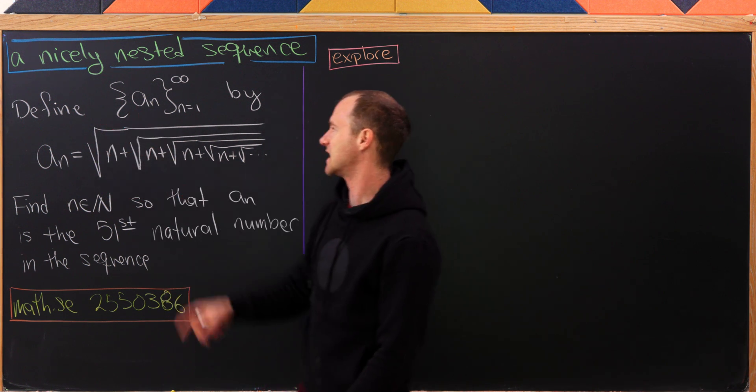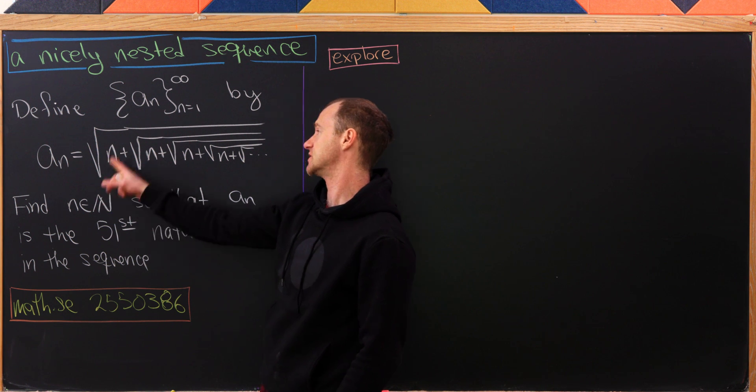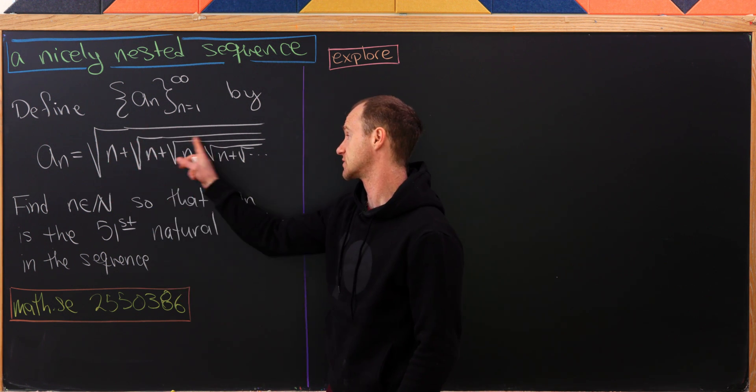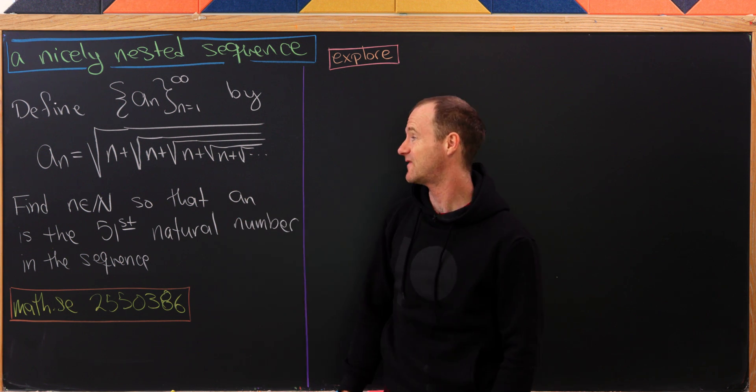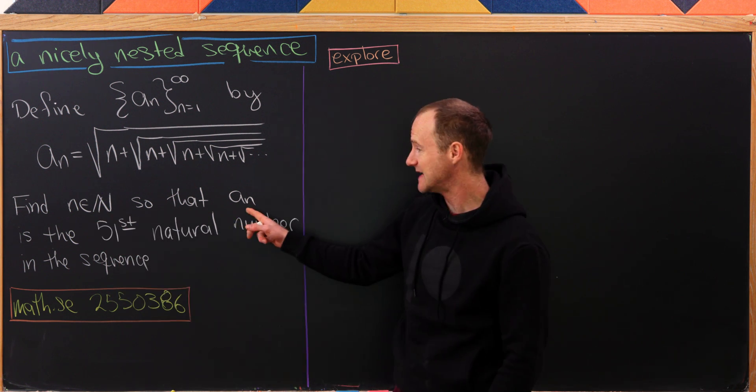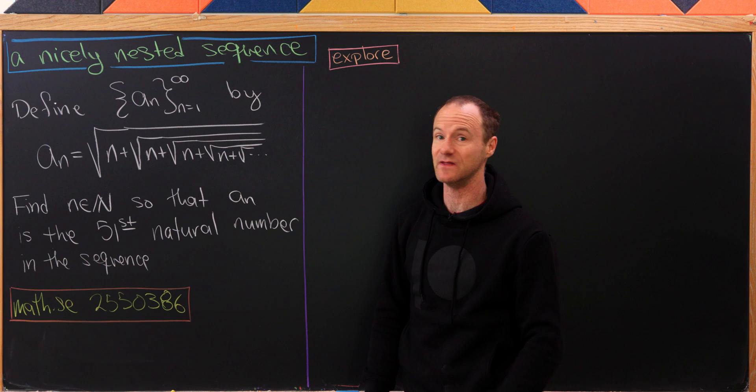Let's define a sequence by the following rule: a_n equals the square root of n plus the square root of n plus the square root of n plus the square root of n, infinitely nested. Our goal is to find the natural number n so that a_n is the 51st natural number in this sequence.